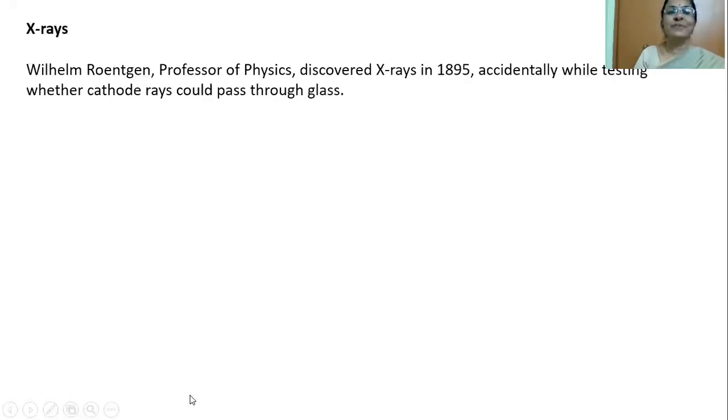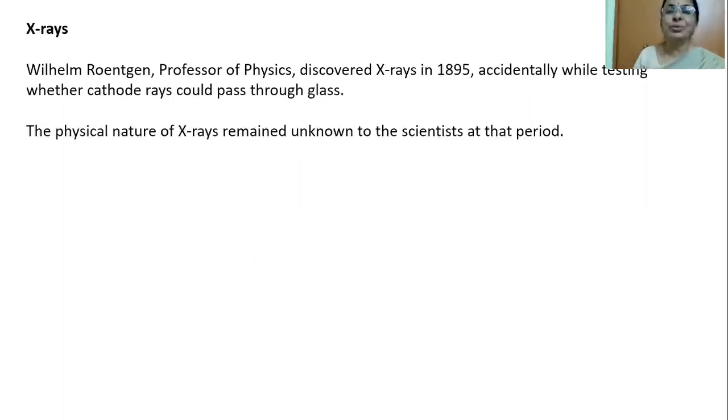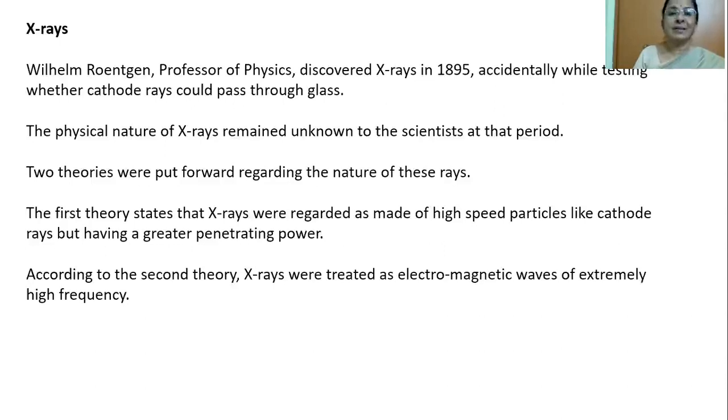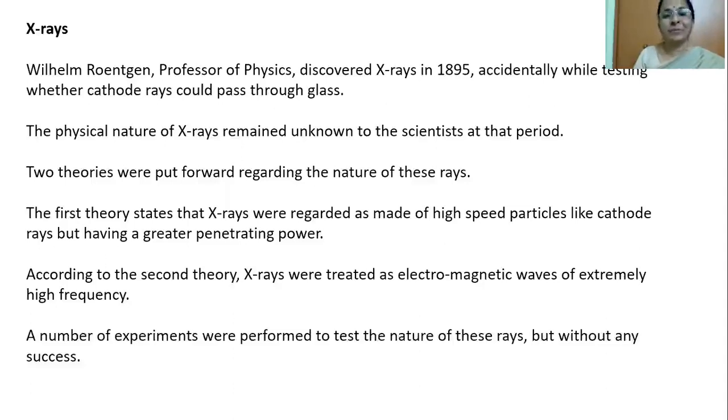Wilhelm Roentgen, professor of physics, discovered X-rays in 1895 accidentally while testing whether cathode rays could pass through glass. The physical nature of X-rays remained unknown to the scientific community at that period. Now scientists put forward two theories regarding the nature of these rays. The first theory states that X-rays were regarded as made up of high-speed particles like cathode rays but having a greater penetrating power. According to the second theory, X-rays were treated as electromagnetic waves of extremely high frequency or extremely low wavelength. A number of experiments were performed to test the nature of X-rays but without any success.